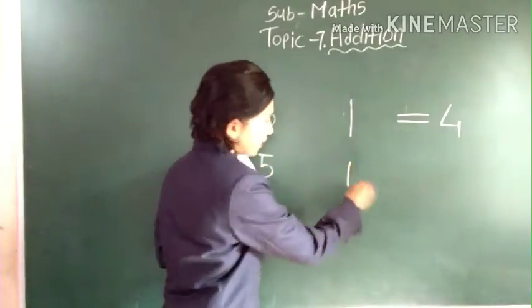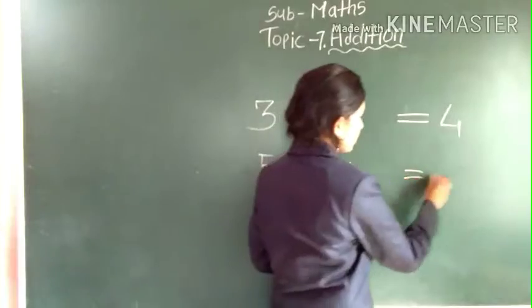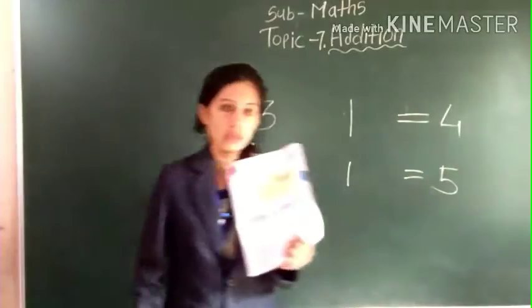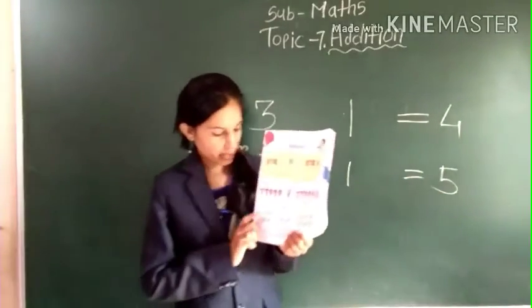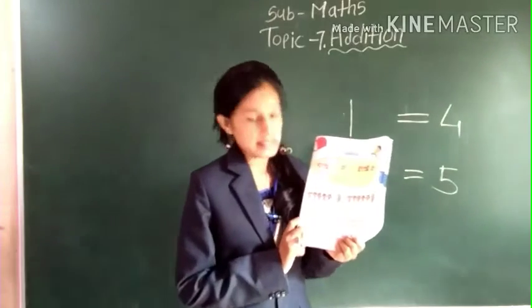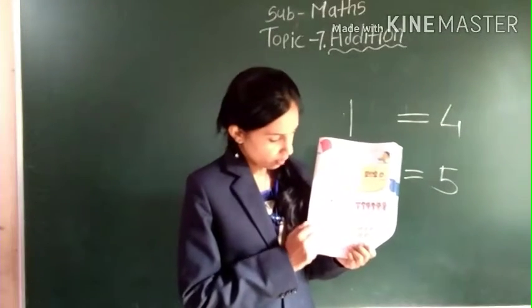We read it as: 5 and 1 more makes 6. 5 and 1 more makes 6. There were 5 girls, and we added 1 more girl, so there are 6 girls.